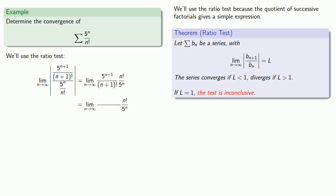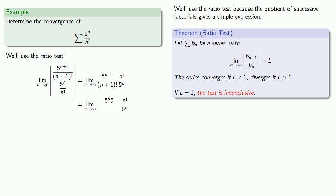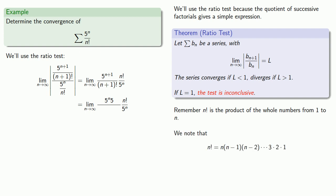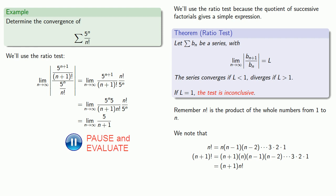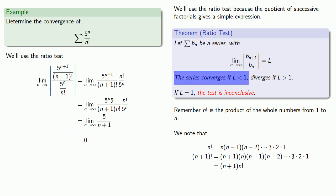5 to the n plus 1 is 5 to the n times 5. Meanwhile, n factorial is the product of the whole numbers from 1 to n, and n plus 1 factorial is n plus 1 times n factorial. So we can replace n plus 1 factorial with n plus 1 times n factorial and simplify the expression. Taking the limit as n goes to infinity, since the ratio of successive terms converges to a number less than 1, our series converges.